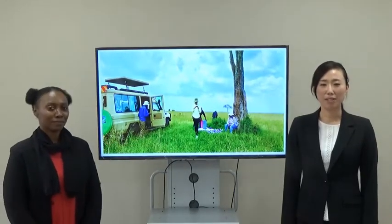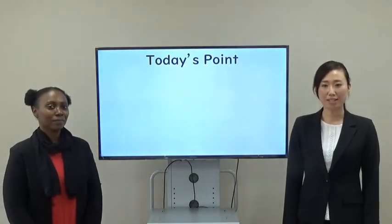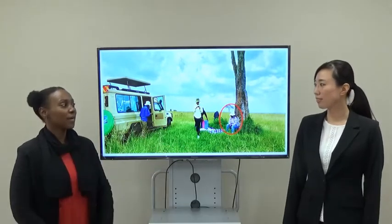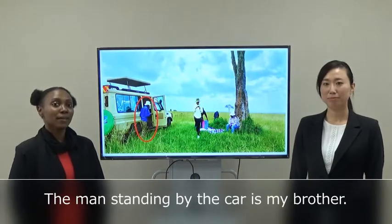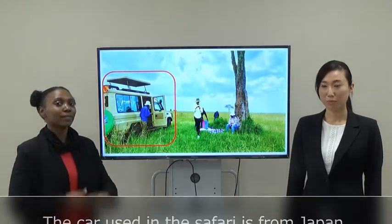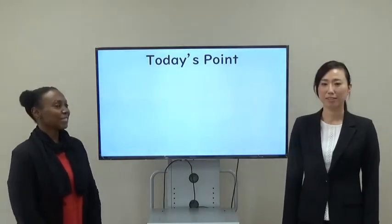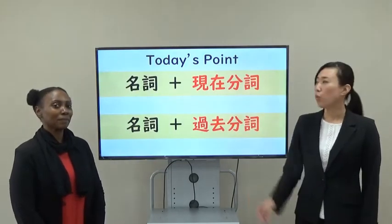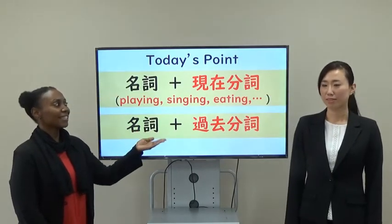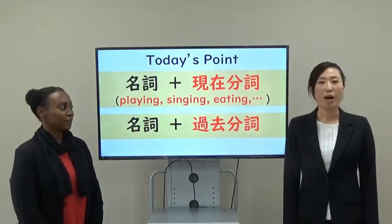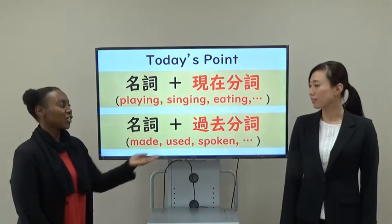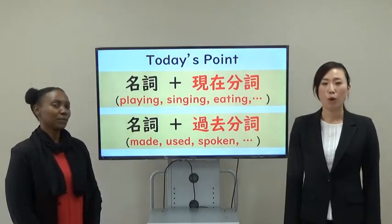Okay everyone! What's today's point? Can you guess? Well, the woman sitting under the tree is my mother. And the man standing by the car is my brother. The car used in the safari is from Japan. Today's point is this. What is this? For example: playing, singing, eating, and so on. Oh, I see. How about this? For example: made, used, spoken, and so on.